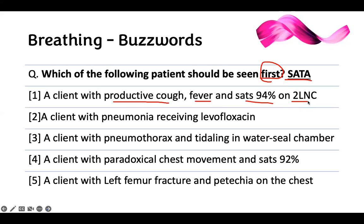Making a diagnosis with multiple symptoms. We have a patient with productive cough, fever, and saturation of 94%. I have cough, temperature, and I'm saturating low — something is affecting my lung. This is what we call pneumonia.